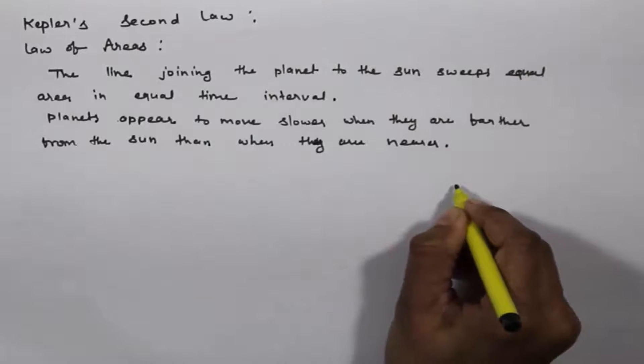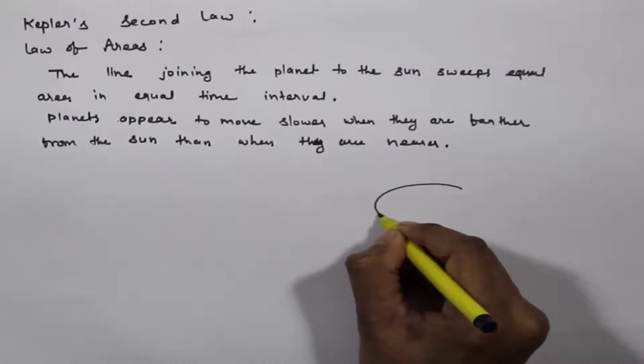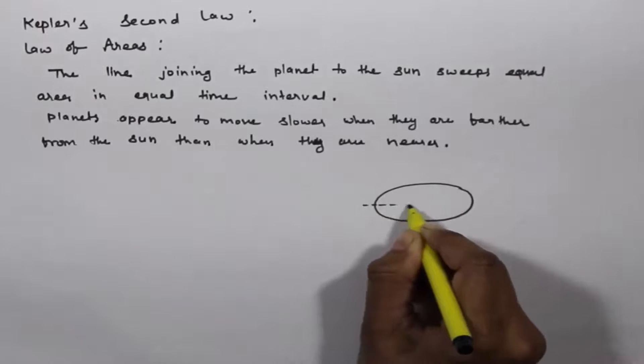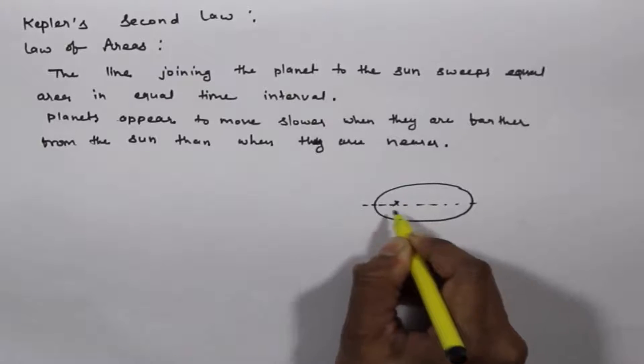We can describe this by a diagram. This is an elliptical orbit. The Sun is at the focus.